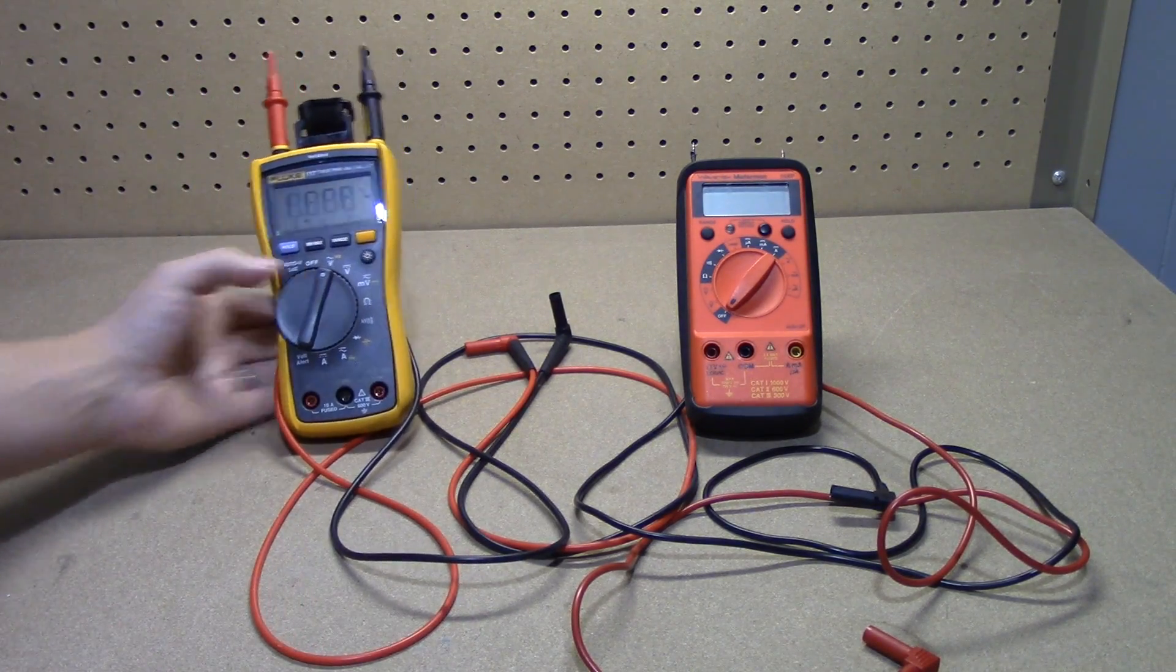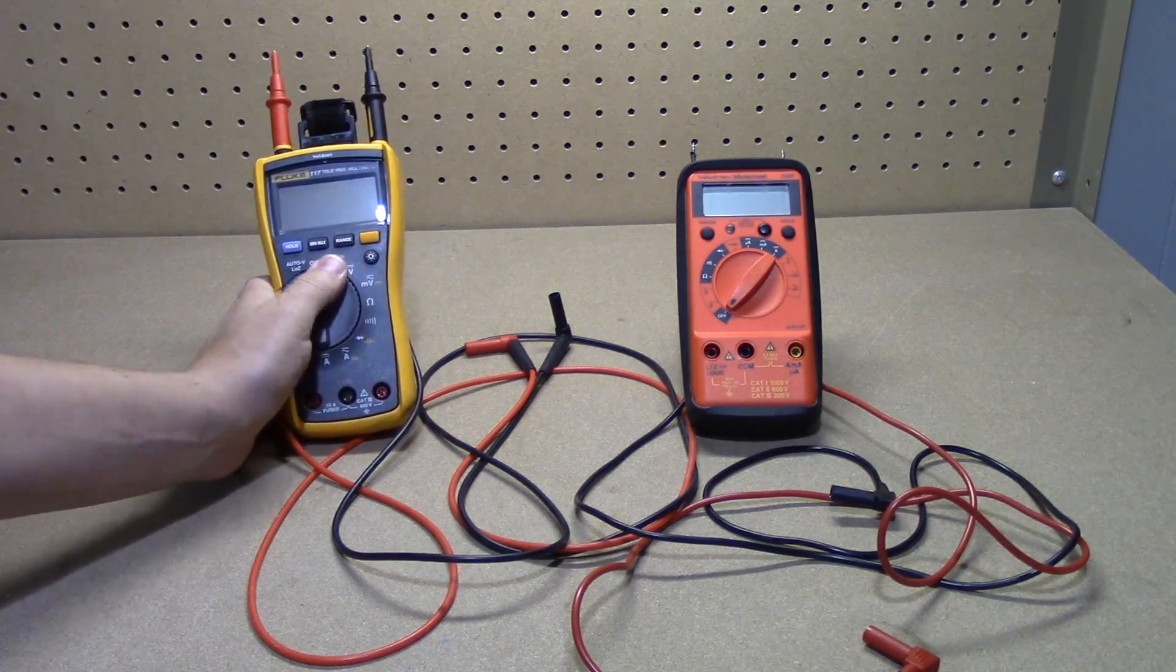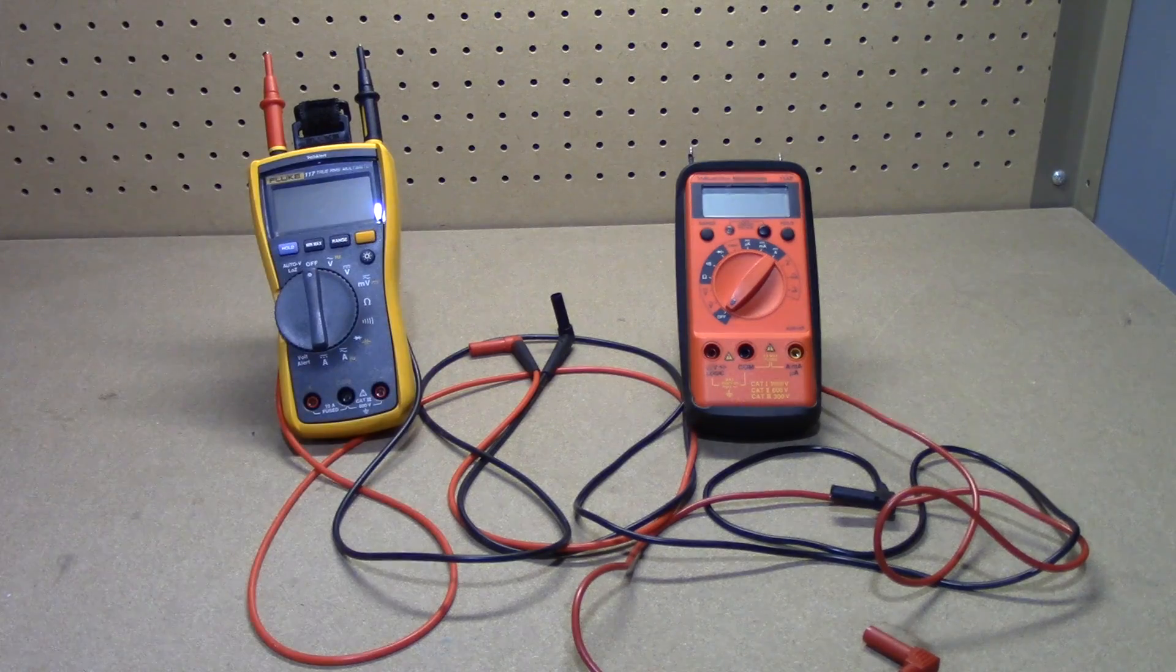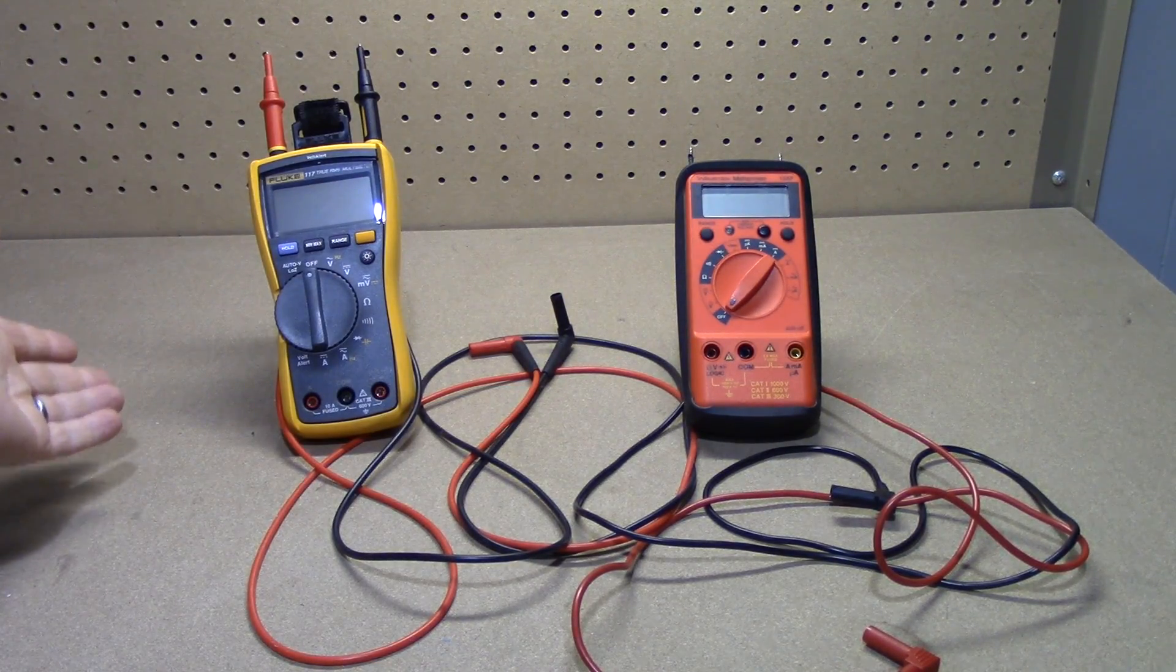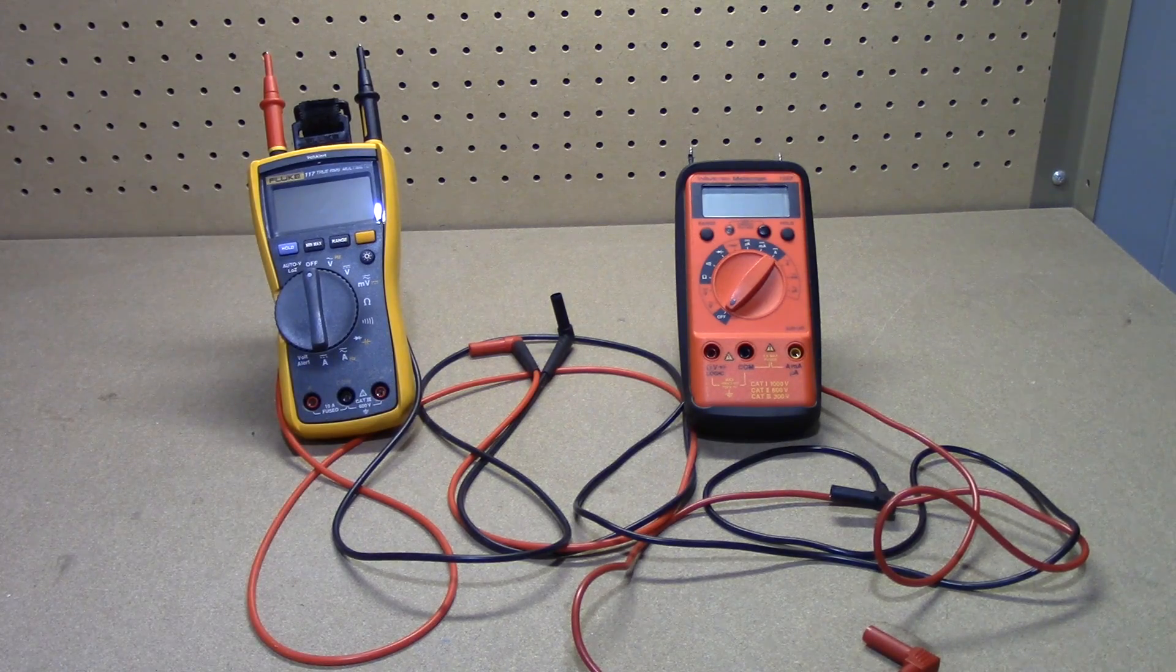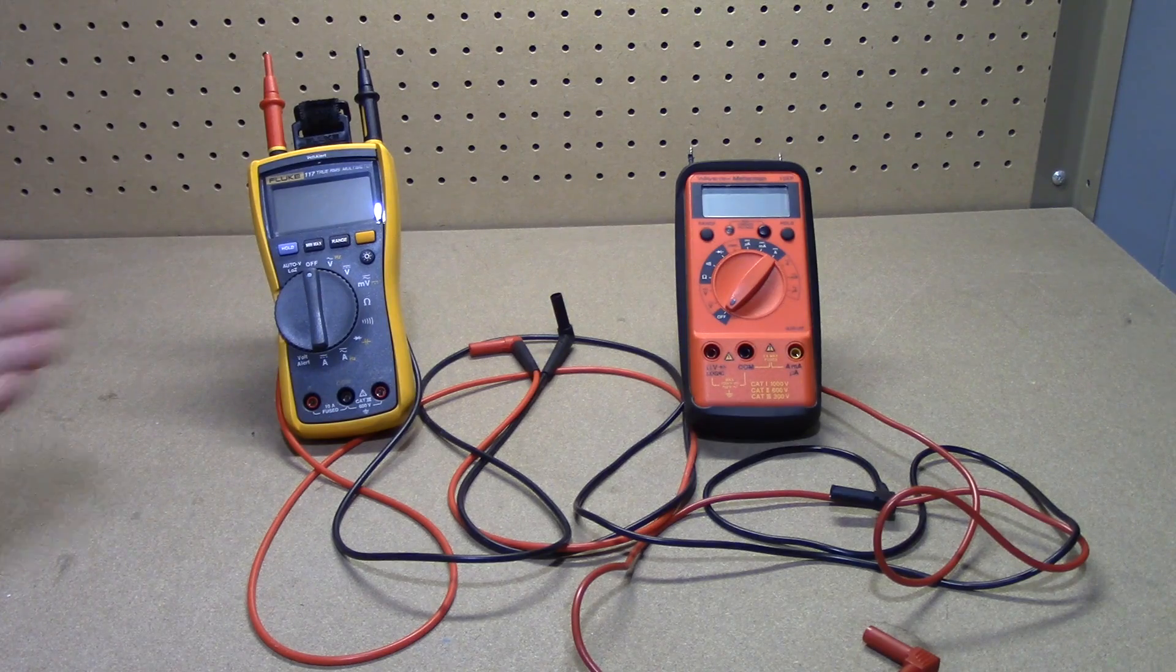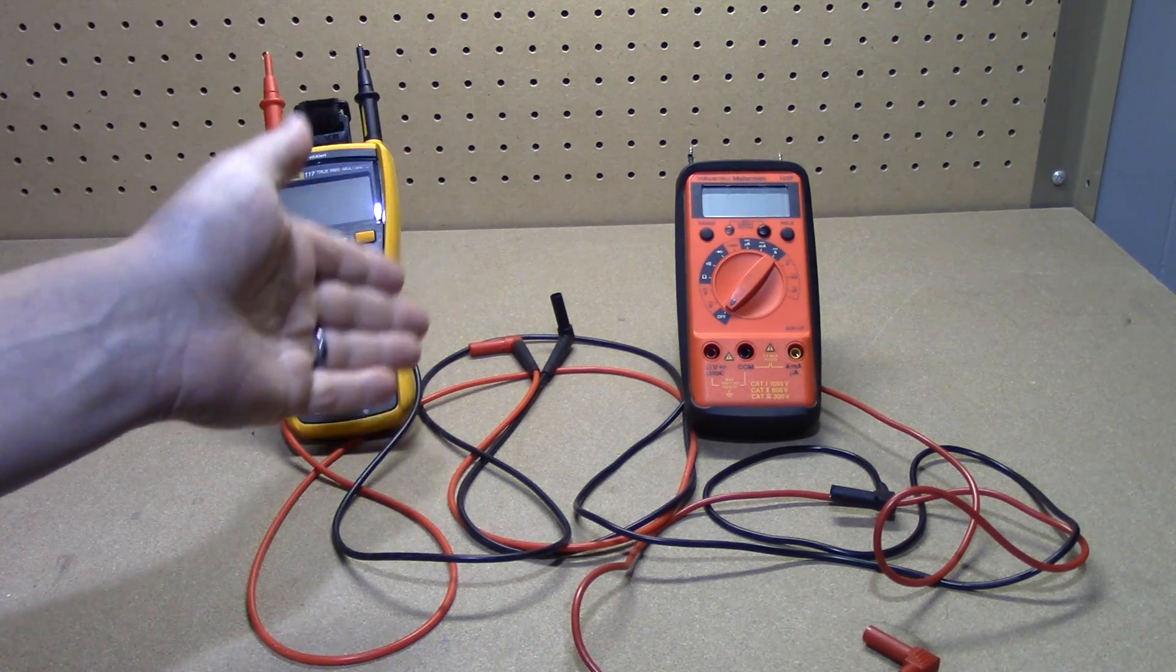And one thing I forgot to mention, the Fluke does have a backlight whereas the Meterman does not. But there you go, that's the difference between a cheap and expensive meter. They both will get the job done, one has a few more features, one feels a little more luxurious, but other than that they'll both get you where you want to be. All right, till next time I'm the Uninformed Human, goodbye!